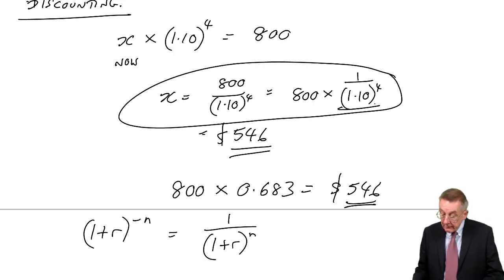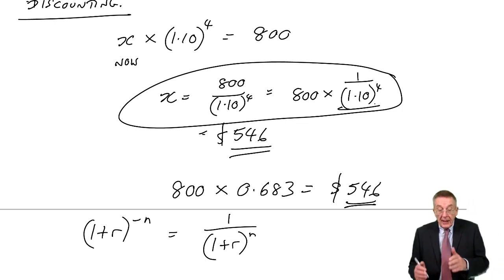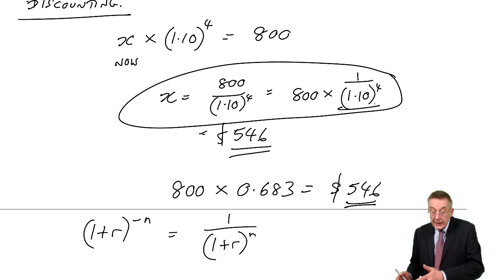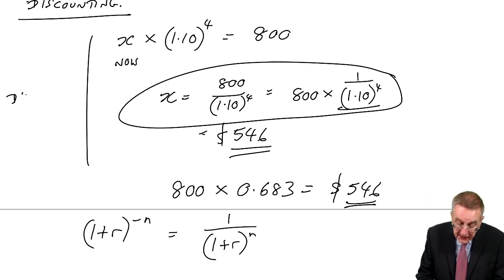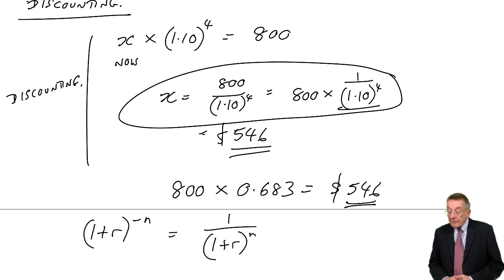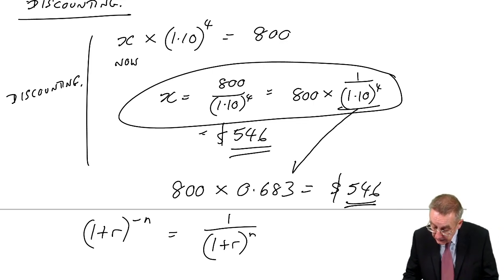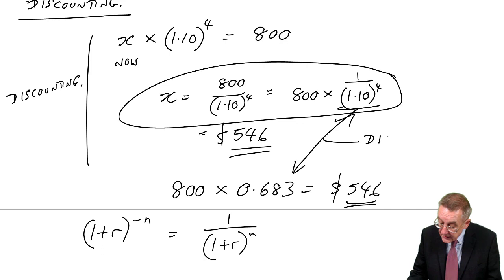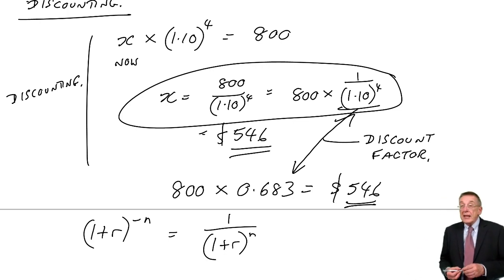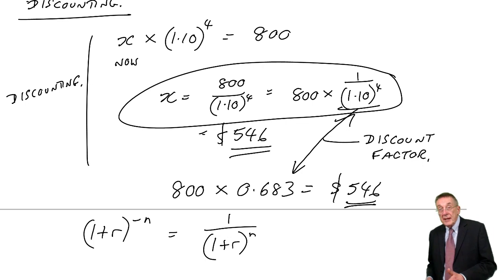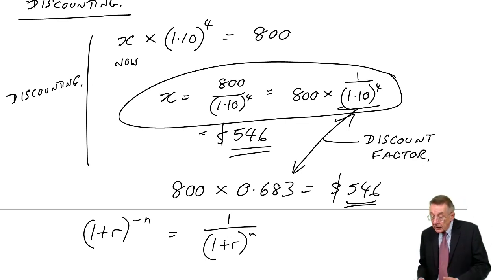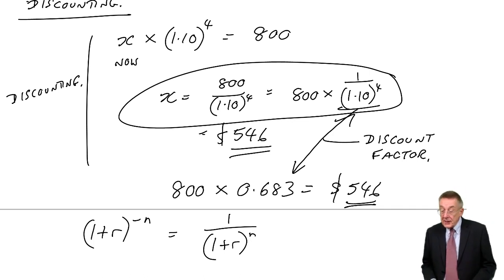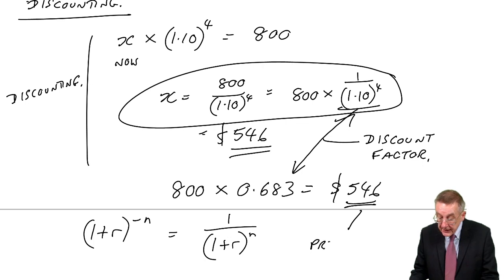The terminology: the exercise of seeing how much now is equivalent to 800 in four years is called discounting, or effectively taking out the interest. The figure we multiply by — 1 over 1 plus r to the power n, or the figure from the tables — is known as the discount factor. And the equivalent amount now — we're saying you'd need to deposit 546 now to end up with 800 in four years' time — is known as the present value.